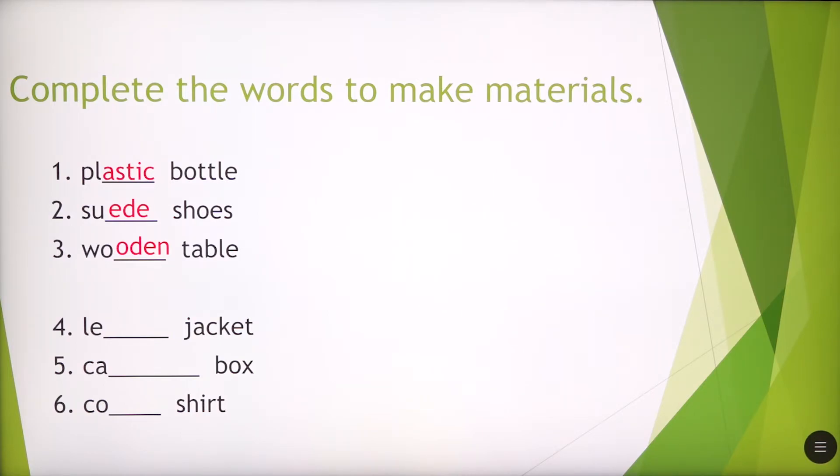Number four, L-E jacket. What's this word? What kind of letters are missing there? It's leather jacket. Number five, C-A box. What kind of word is it here? It's cardboard box. Number six, C-O shirt. It's cotton shirt.